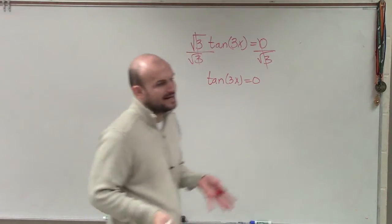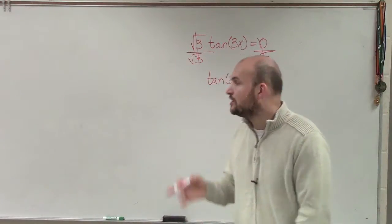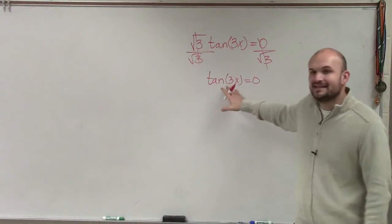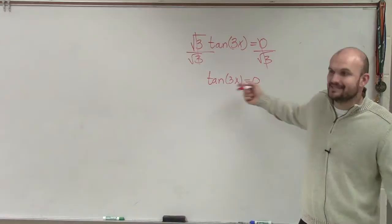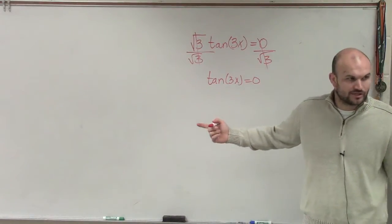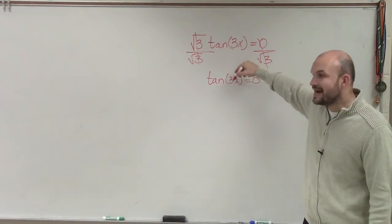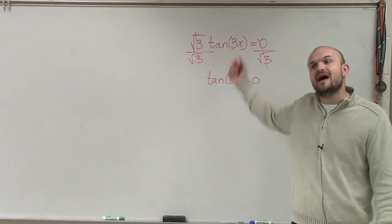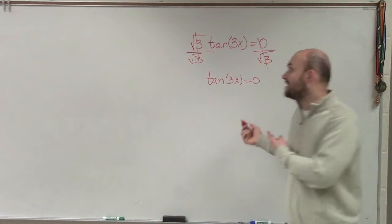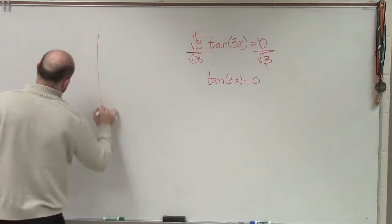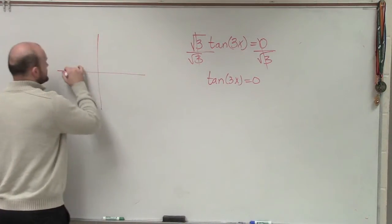When you guys are using double and half angles and we're solving for them, you cannot divide this out. I know this makes it easy because it's 0, but you've got to make sure you do not divide out this 3. We have to evaluate for tangent first, and then we can divide it out. So to evaluate for tangent, we've got to go back to our lovely unit circle.